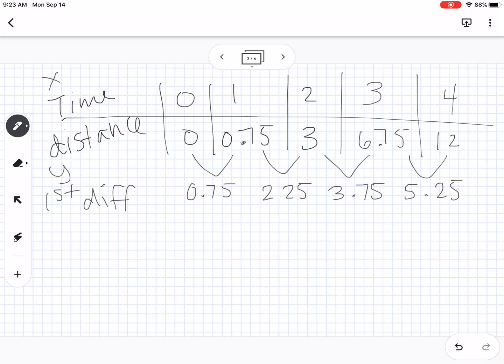Then if we take the second differences, we're going to take the differences between the differences. That's what our second differences are. So we get 1.5, 1.5, 1.5. Okay, so those are all constants. So that means that this is a quadratic model. So if your second differences are constant, then it's quadratic.